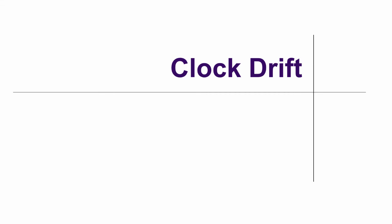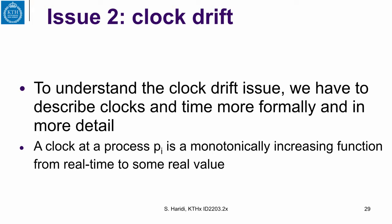We will now address clock drift, which is the second issue. To understand the clock drift issue, we have to describe clocks and time more formally and in some detail. Remember: a clock at a processor PI is a monotonically increasing function from real time to some real value.